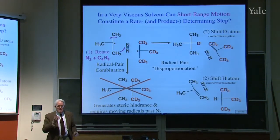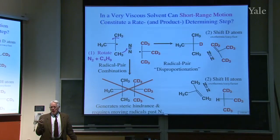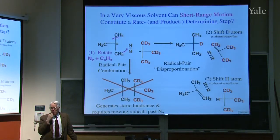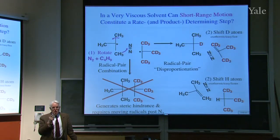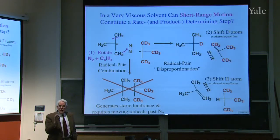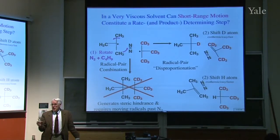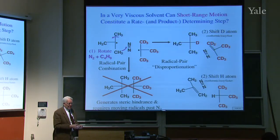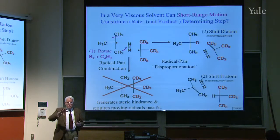So there's a competition between transferring hydrogen and transferring deuterium. But what's the product-determining step? What determines which one you do? If it's the hydrogen transfer, then we know there'll be a kinetic isotope effect, and you'll transfer hydrogen more often than deuterium. But if it's the motion, then the two rotations should be just about equal. There's not very big effect from deuterium on the rotation.